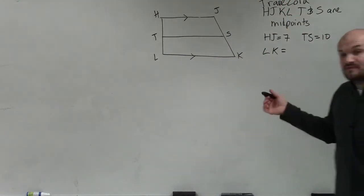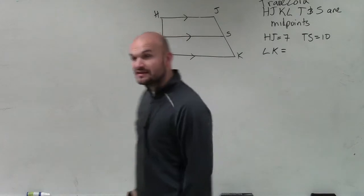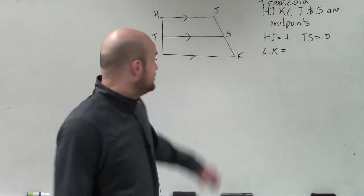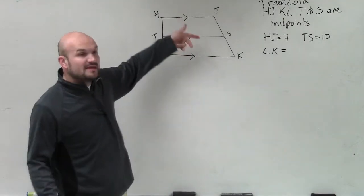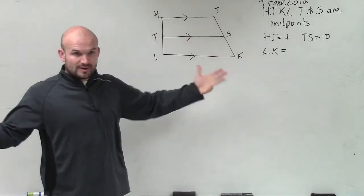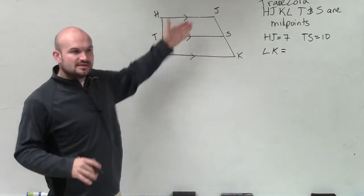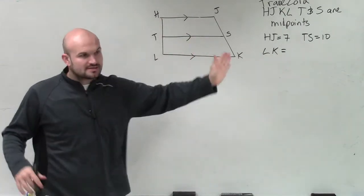Then they say T and S are midpoints. Well, if T and S are midpoints, we know that we can also say that that's parallel to your two bases, right? You have our two bases, and then this is what we call our mid-segment. Remember when we outlined trapezoid, we wrote in bases, mid-segment, here's your two legs.